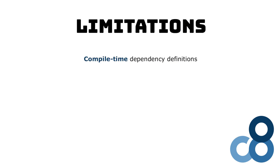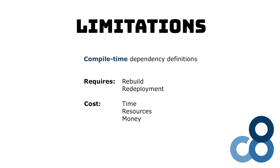The current limitation is that we still define our code dependencies at compile time. If we want to change how the dependencies get wired up, we need to change the program class and rebuild the entire application. Imagine an application in production that not only needs to be rebuilt on the developer machine or a build on the continuous integration system, but also deployed onto the user machines. This process can take quite some time, needs bandwidth, and depending on how complex the infrastructure is, it can cost a lot of money.